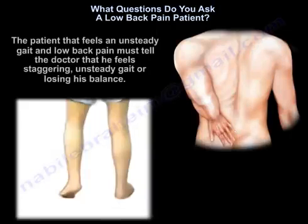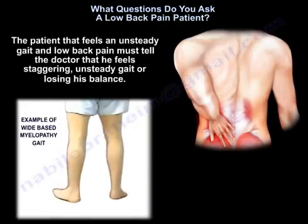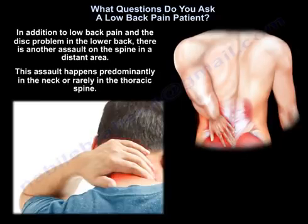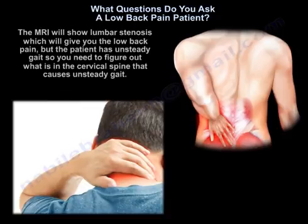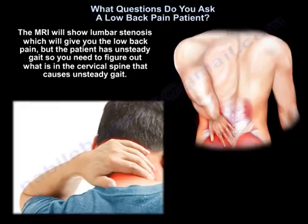A patient who feels unsteady gait along with low back pain must tell the doctor they feel staggering, unsteady, or are losing their balance. So in addition to the low back pain and disc problem in the lower back, there is another assault on the spine in a distant area — predominantly in the neck or thoracic spine. The MRI will show lumbar stenosis causing the low back pain, but you also need to figure out what is in the cervical spine that causes the unsteady gait.